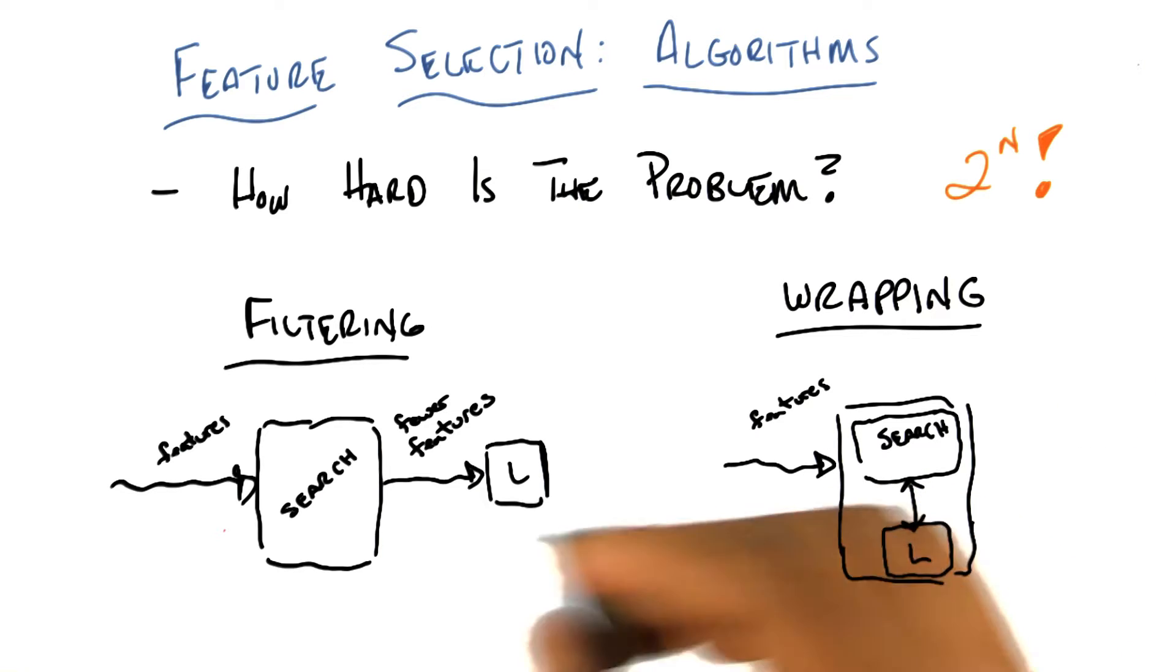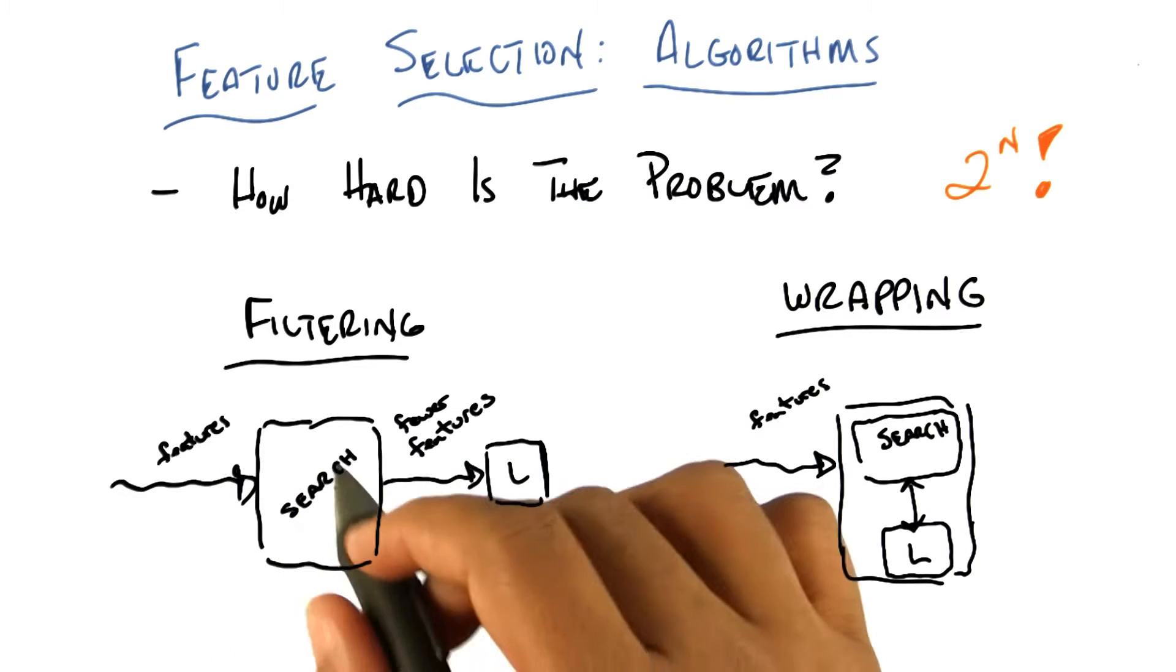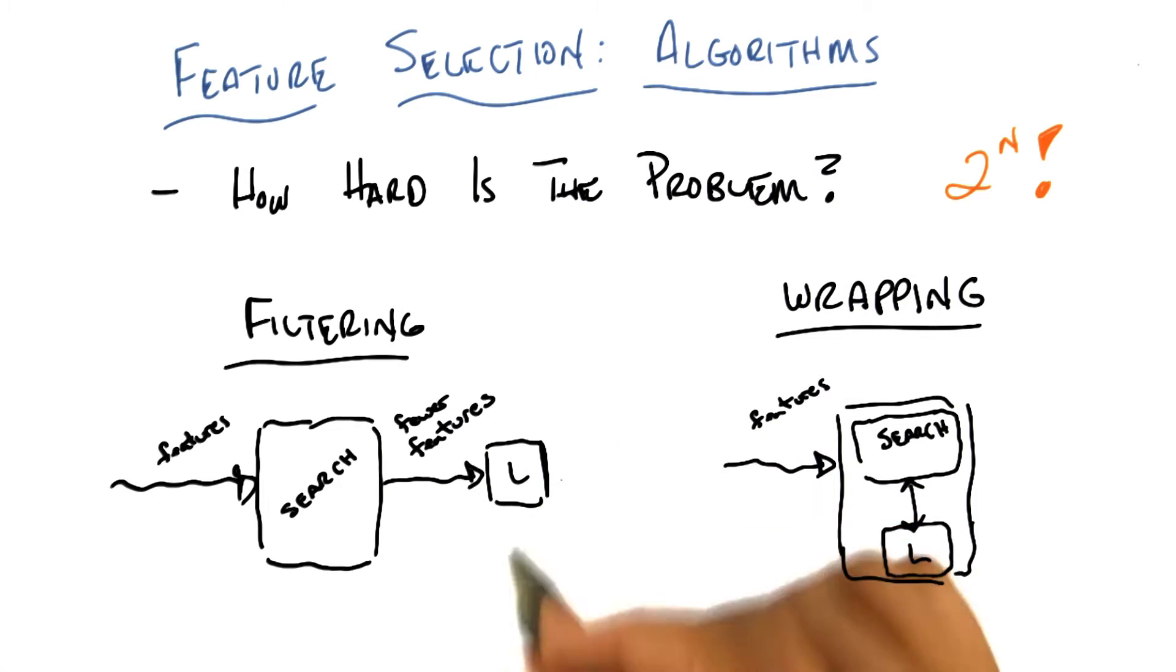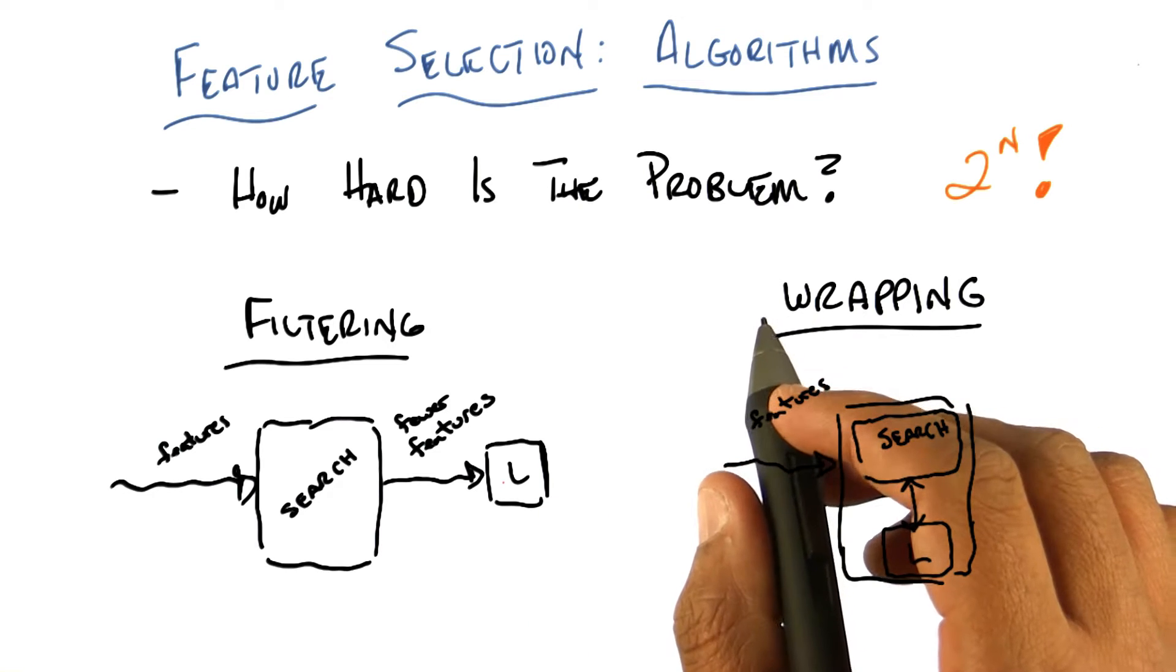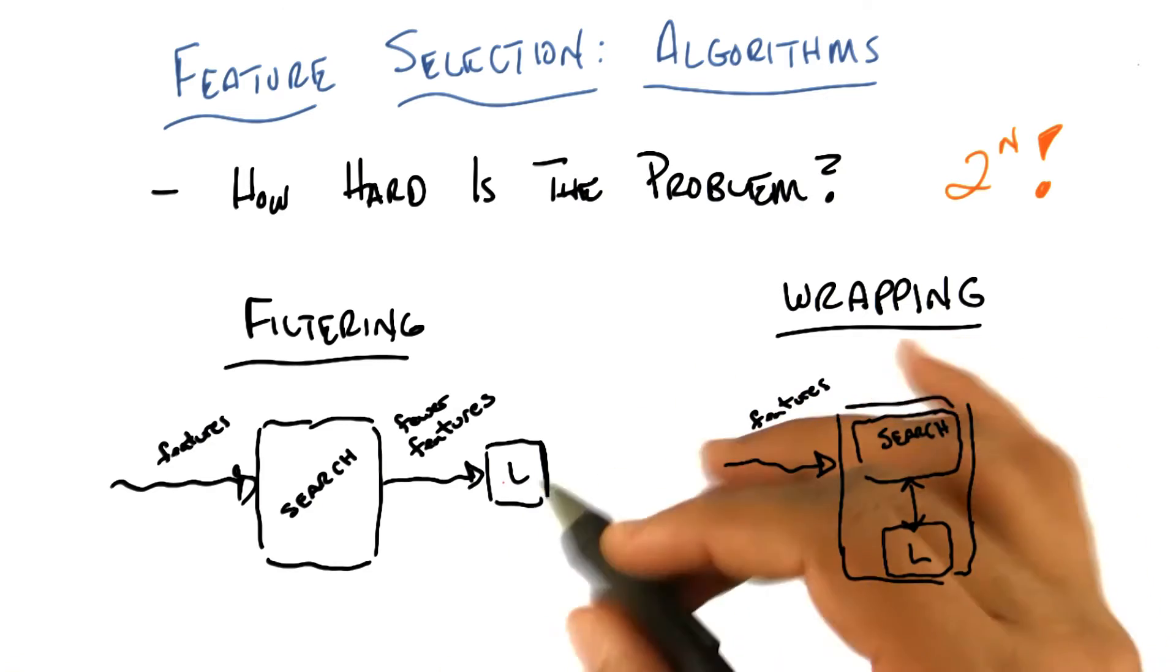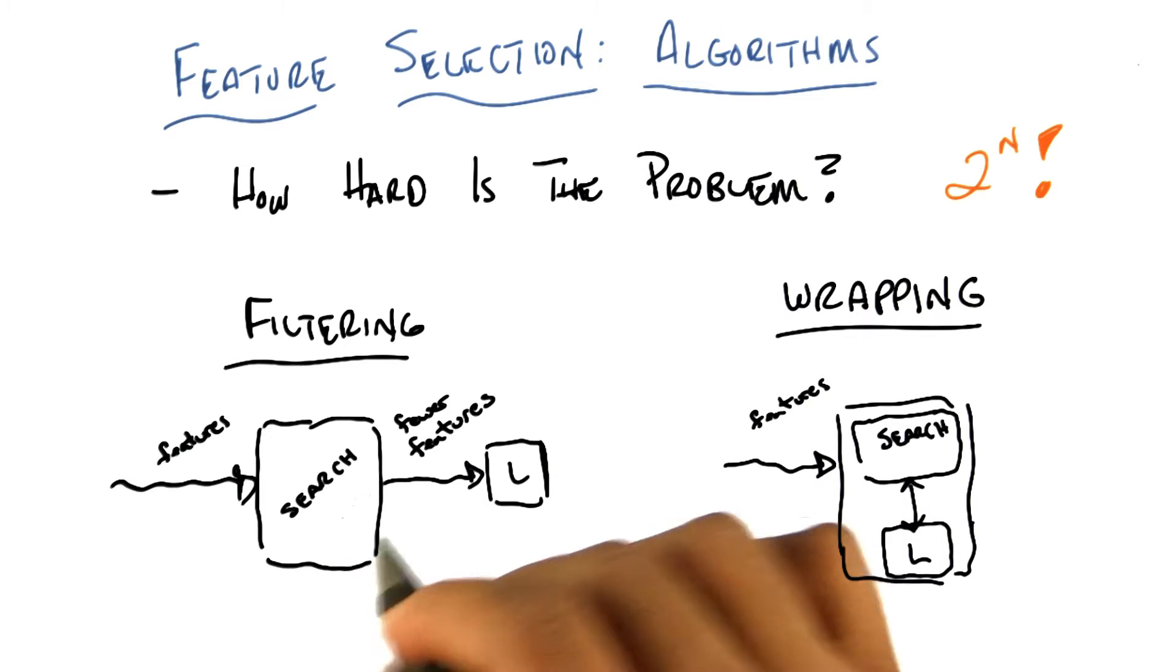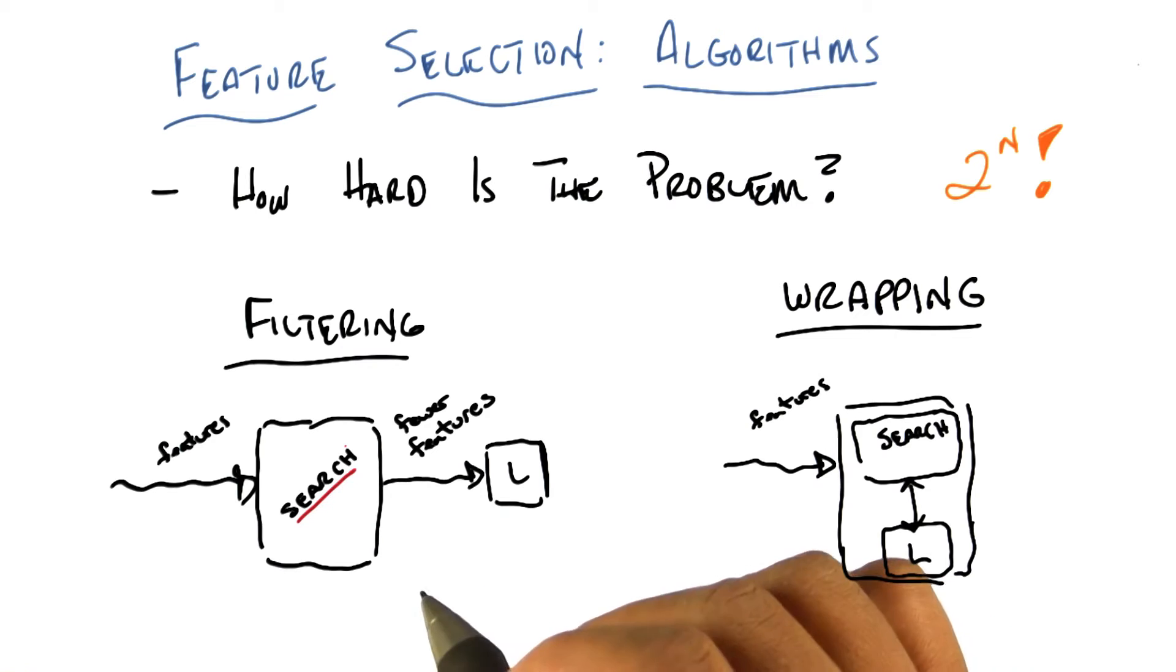So filtering basically works like this. You have a set of features as input. You run them through some algorithm that maximizes some kind of criteria. And then it outputs fewer features and passes those to some learning algorithm that will then use it for classification. It could be regression more generally, but without loss of generality, let's assume that we're worried about classification problems here. So you'll notice then that the criterion of how you know whether you're doing well or not is buried inside the search algorithm itself.